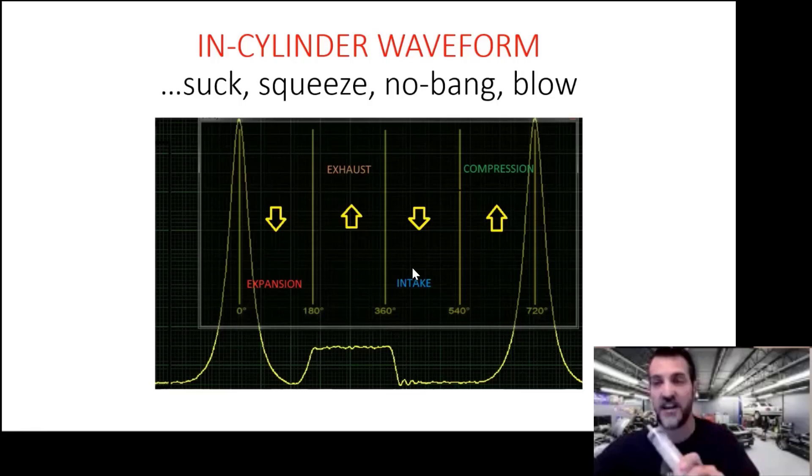Top dead center to top dead center represents 720 degrees of crankshaft rotation. Now I want you to watch my syringe as I re-describe this. First of all, I want to start at this part of the waveform. I know there's no numbers on this screen to designate pressure value as it regards amplitude here, but take my word for it. This is about zero PSI.